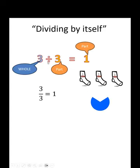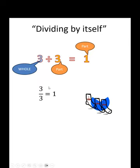If we divide a number by itself, we make the number in each group the same as the whole number we started with. We're going to have 1 group. 3 divided by 3 is 1. 3 over 3 is 1.